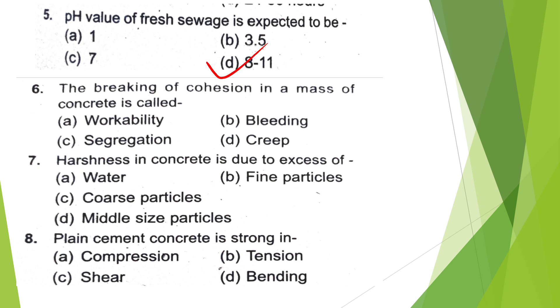The breaking of cohesion in a mass of concrete is called — Workability, Bleeding, Segregation, or Creep? The answer is option C — Segregation.